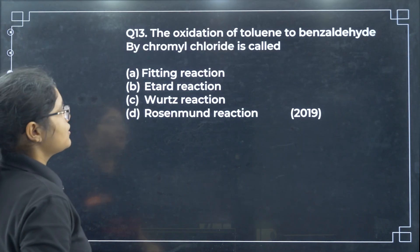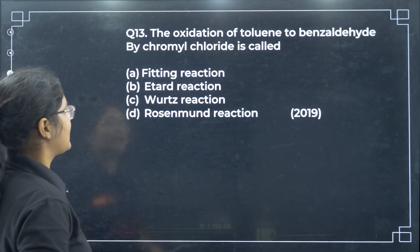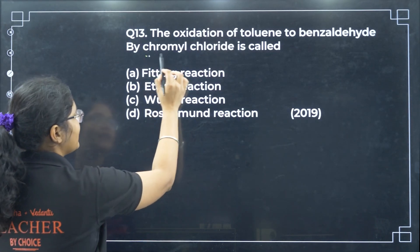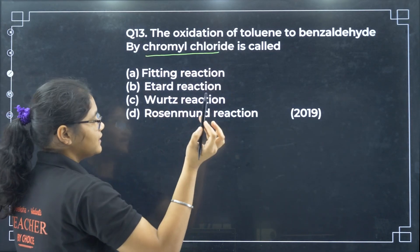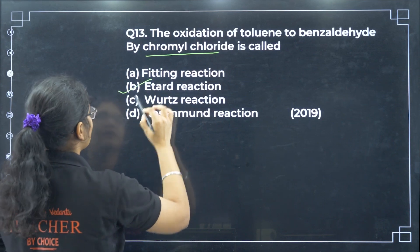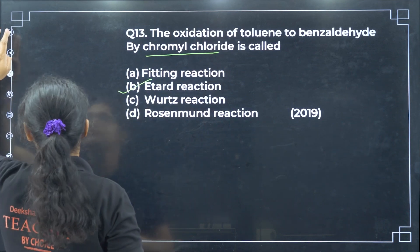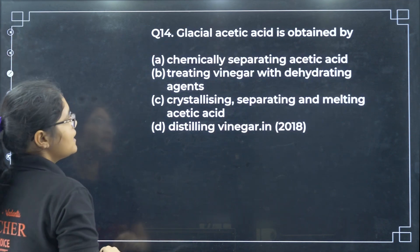The oxidation of toluene to benzaldehyde using bichromyl chloride is a name reaction called the Etard reaction — option B.